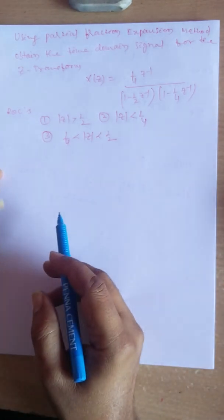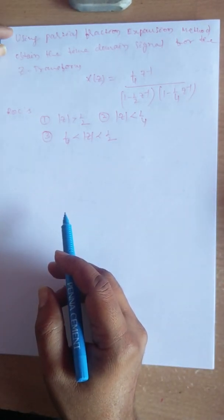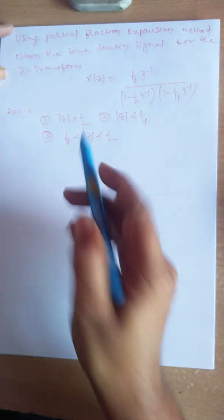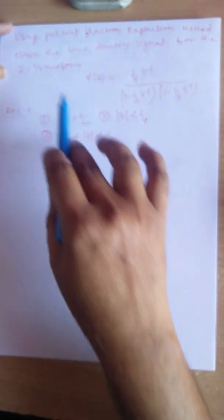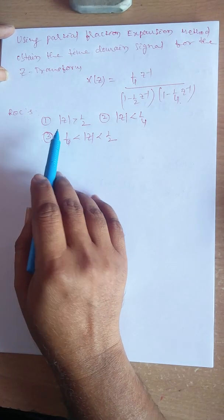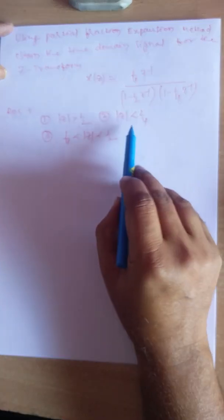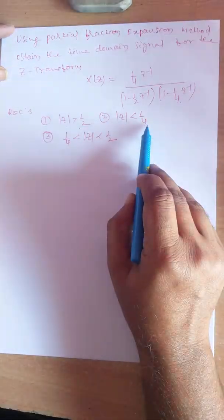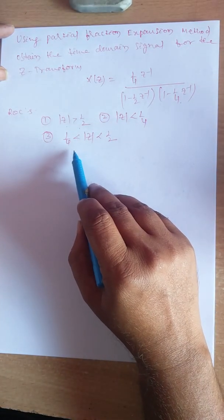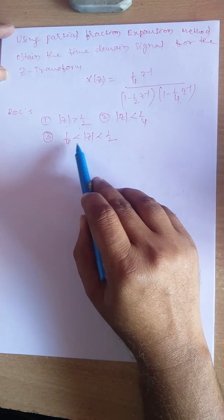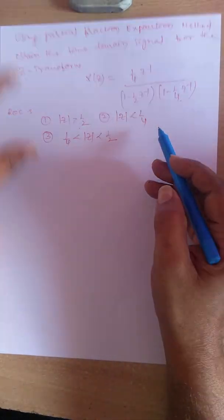This problem covers inverse Z transformation using the partial fraction expansion method. We need to find the time domain sequence of the Z transform where X(Z) is (1/4 Z⁻¹) divided by (1 - 1/2 Z⁻¹)(1 - 1/4 Z⁻¹), for three different ROCs: first, |Z| > 1/2; second, |Z| < 1/4; third, 1/4 < |Z| < 1/2.